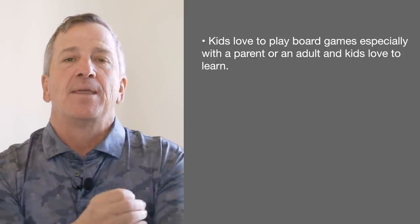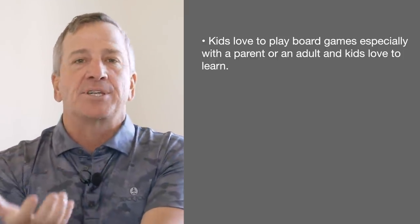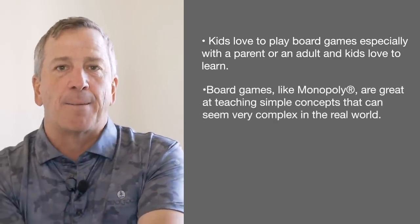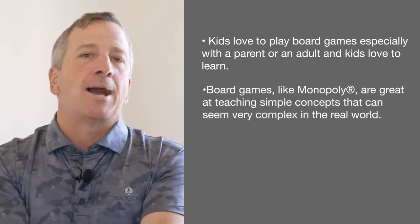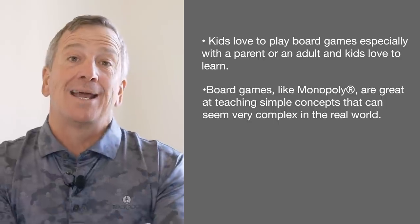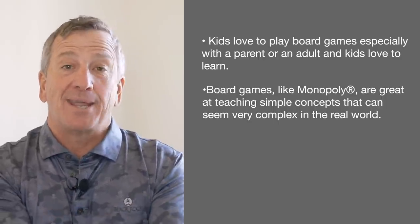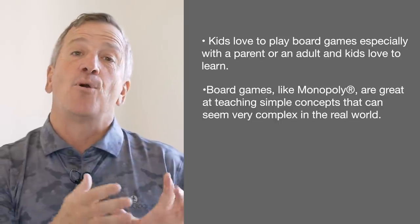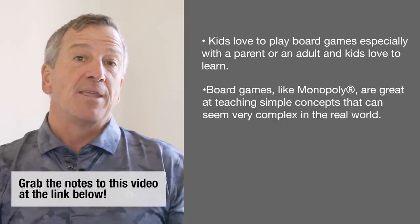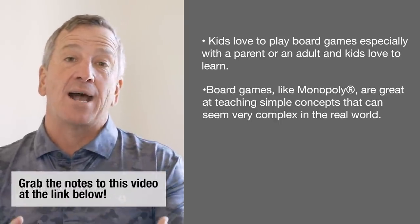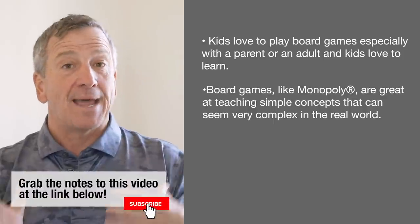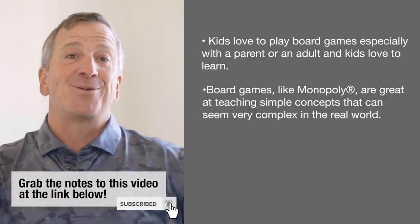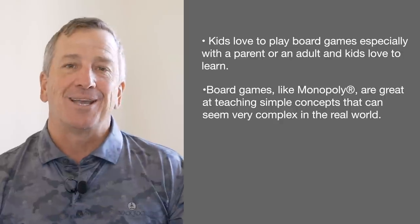I'll talk about Monopoly for a moment because a lot of people understand it. Monopoly is simple — you land on somebody's spot, you pay them rent, just like in the real world; if you own the property, they pay you rent. Four greenhouses, one red hotel — that's the strategy. Buy four greenhouses, then 1031 into a red hotel.